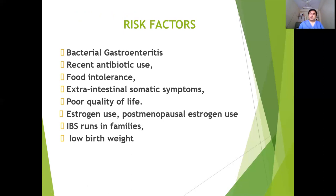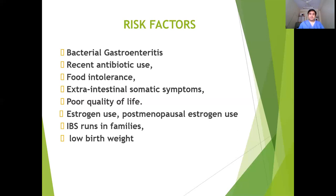The risk factors for Irritable Bowel Syndrome are: if someone had a history of bacterial gastroenteritis in the past, they are more prone to have IBS in the future. If someone had a history of antibiotic use, those antibiotics make them prone to have Irritable Bowel Syndrome. Other risk factors include food intolerance, poor quality of life, and IBS usually runs in the family.